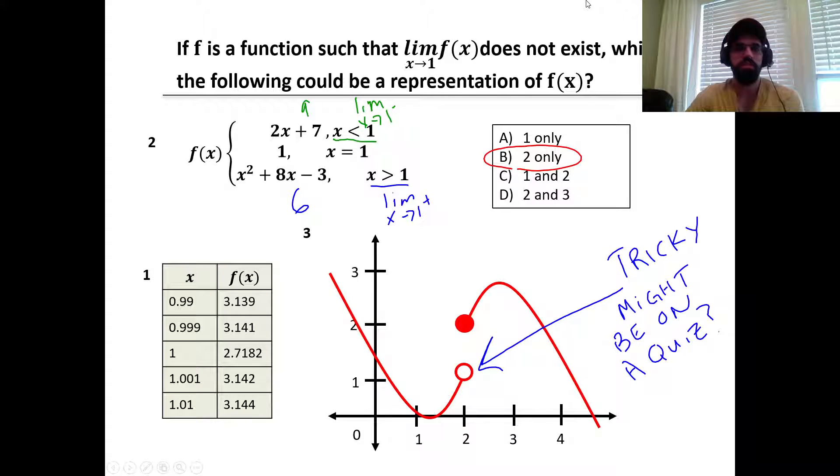If f is a function such that the limit as x approaches 1 of f(x) does not exist, which of the following could be a representation of f(x)?